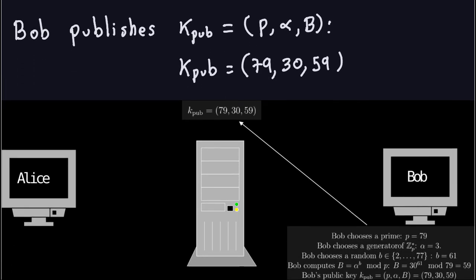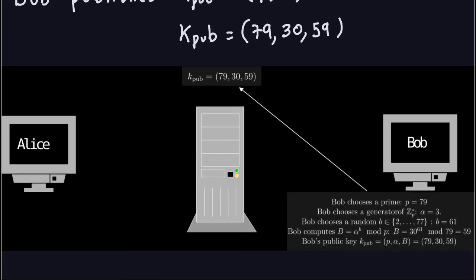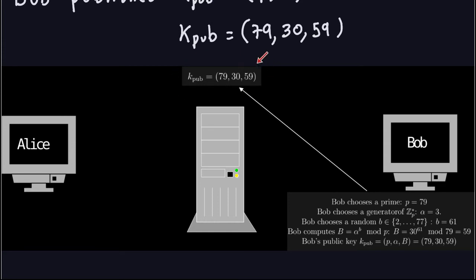Here is the picture on Bob's side. Bob chooses the prime number, the generator, a random number between 2 and P minus 2, does the modular exponentiation, and finally has the public key — the triple. He publishes that for anyone to see, for anyone who wants to send him secret messages. Alice or anyone could then send secret messages using his public key.